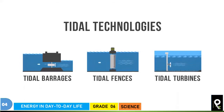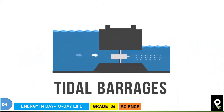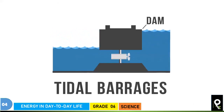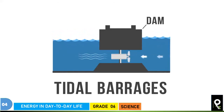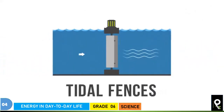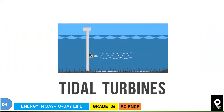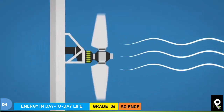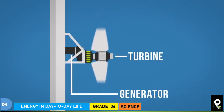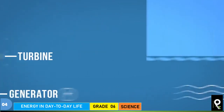The three methods are tidal barrages, tidal fences, and tidal turbines. With tidal barrages, a dam is used to make a turbine rotate and generate electricity. With tidal fences, a rotating fence is used. With tidal turbines, a turbine rotates and the generator generates electricity, supplying power to houses.